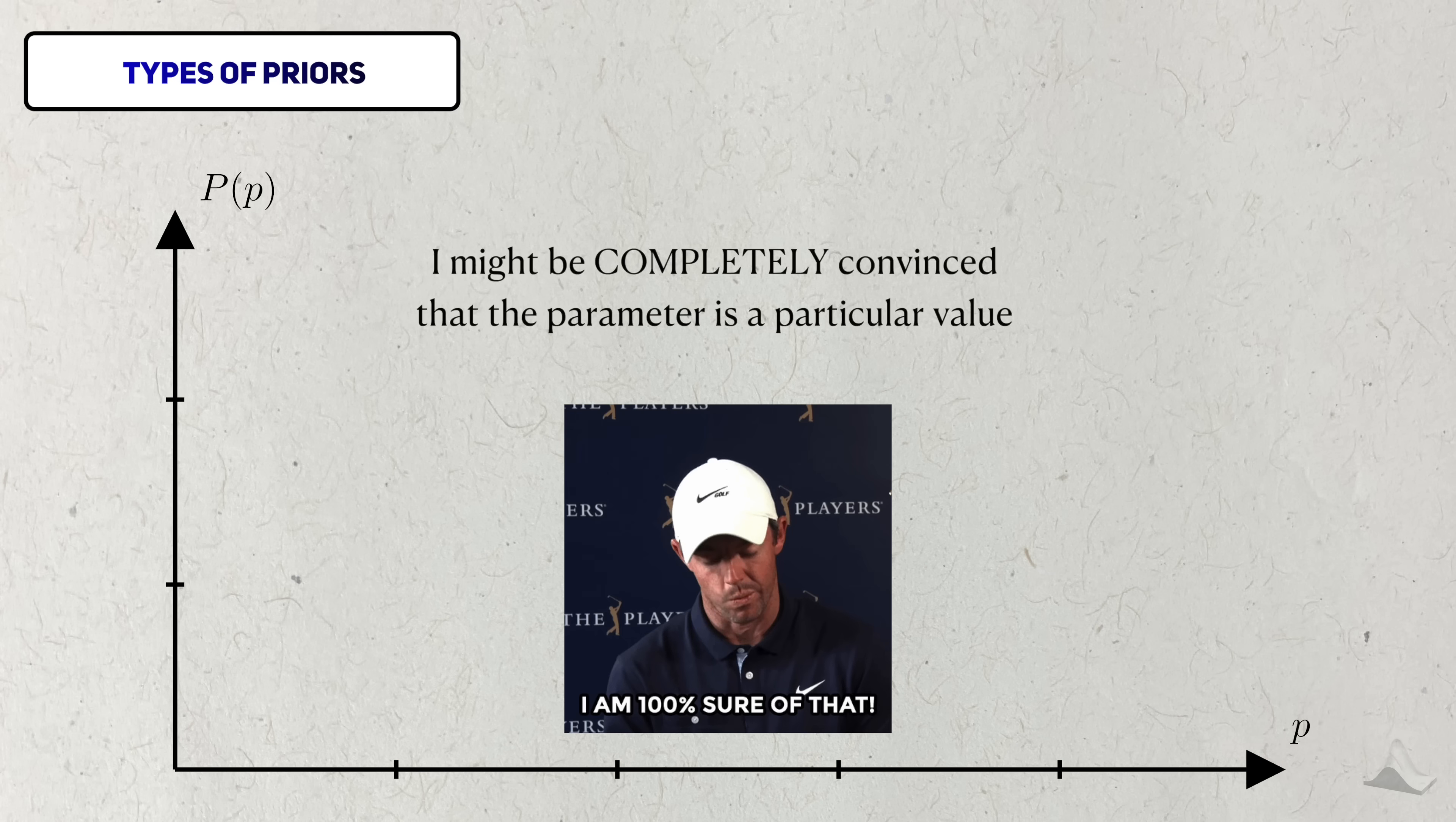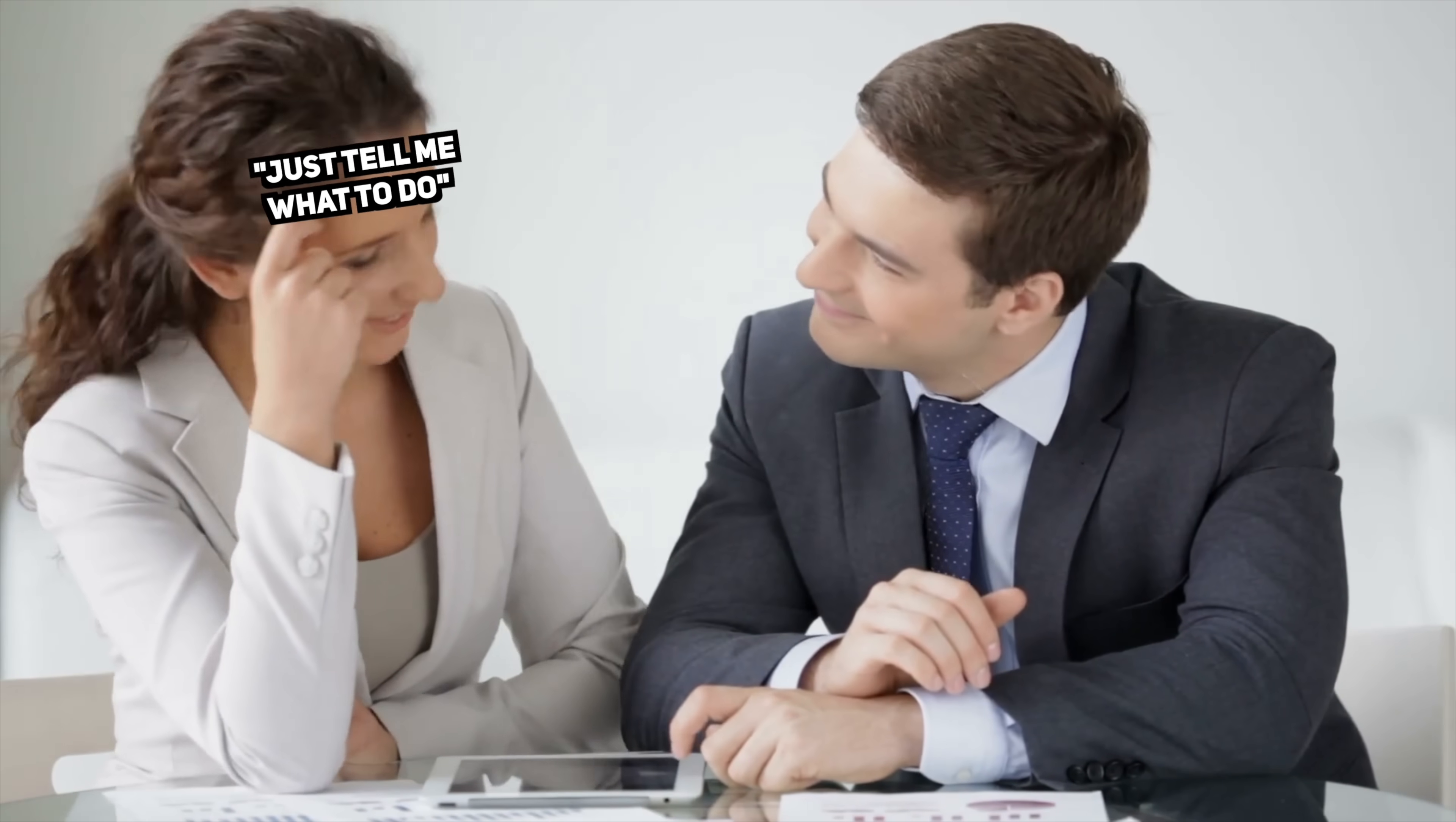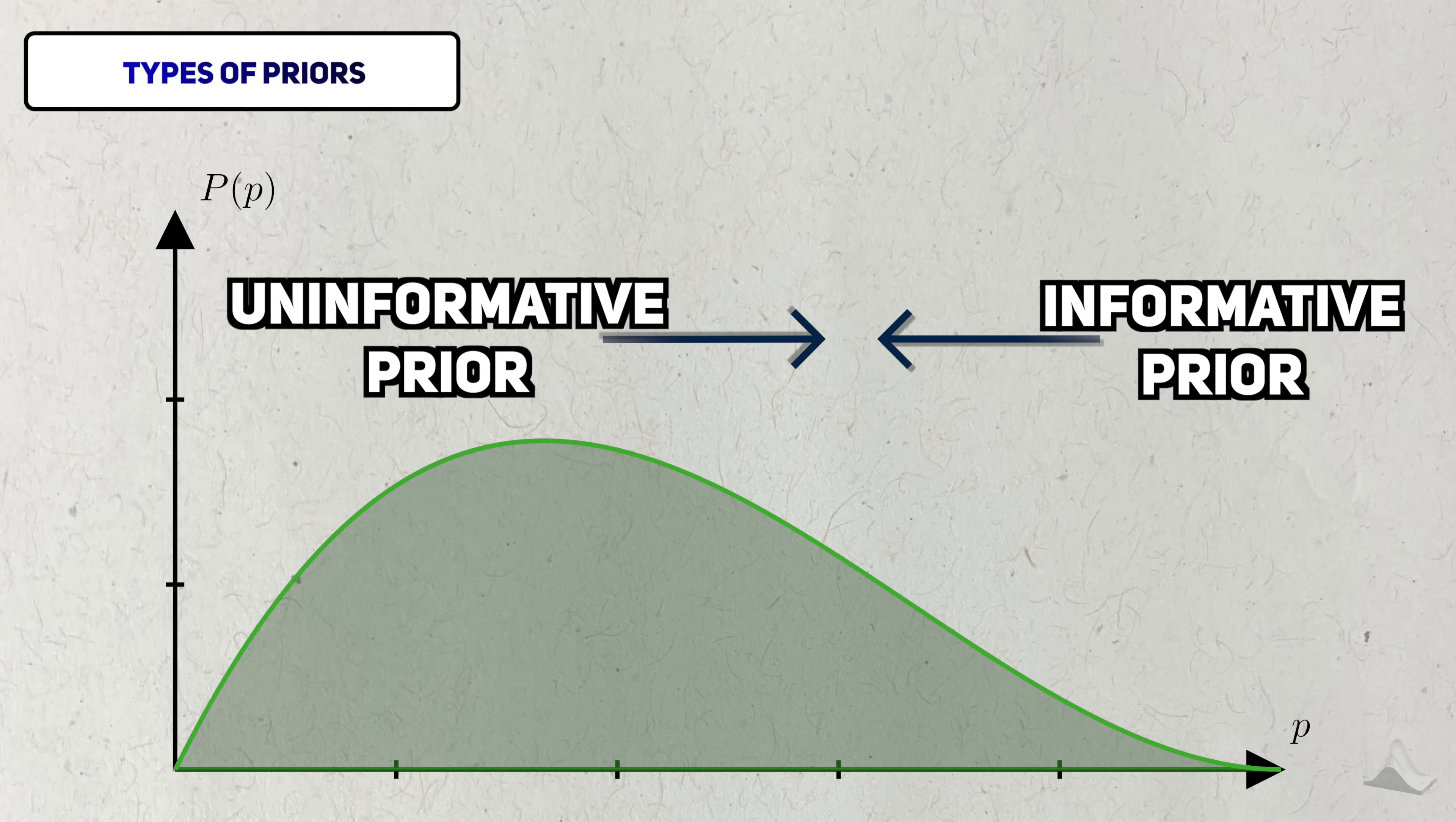On the other extreme, I might be convinced that the success probability is 40% and that it can't possibly be anything else. In terms of a probability distribution, this belief may look like a sharp spike at 40% and almost zero everywhere else. This is an extreme version of what's called an informative prior. In more practical applications, you could talk to experts or refer to previously published papers to form a good informative prior. This is called eliciting a prior.